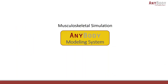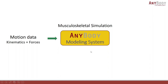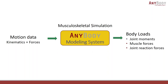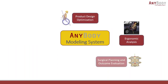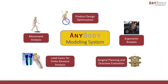The AnyBody modeling system is a system for doing musculoskeletal simulations. The input is measured or described data in the form of kinematics — movements and force data — and then you run your musculoskeletal simulation to output body loads, which are joint and muscle forces. The system has a wide range of applications such as product design optimization, ergonomic analysis, surgical planning and outcome evaluation, finite element analysis load cases, and free movement analysis such as gait in a gait lab with motion capture.